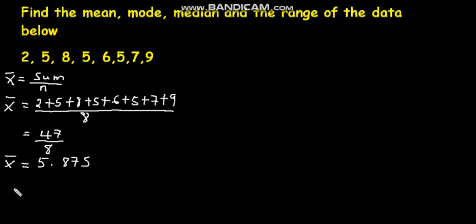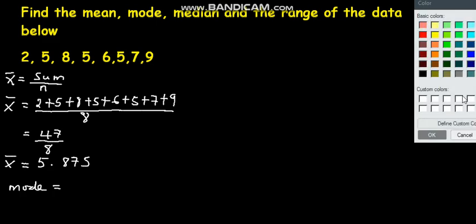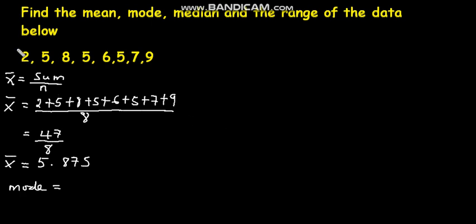Now we need to find the mode. The mode by definition is the number that has appeared most. Now let us check for the mode. 2, how many times has 2 appeared? Checking our data, someone is saying that 2 has appeared once.